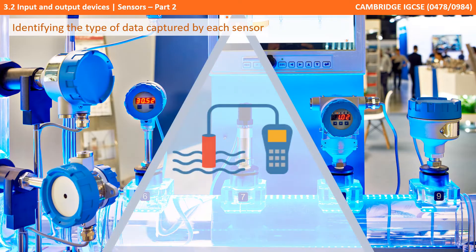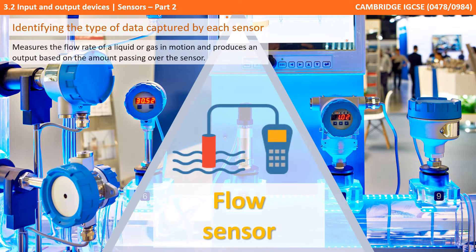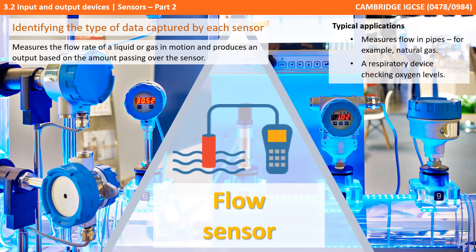The next is flow sensors. These measure the flow rate of a liquid or gas in motion and produce an output based on the amount passing over the sensor. These are commonly used to measure flows in pipes like natural gas lines, and in hospitals they are used in respiratory devices and inhalers.